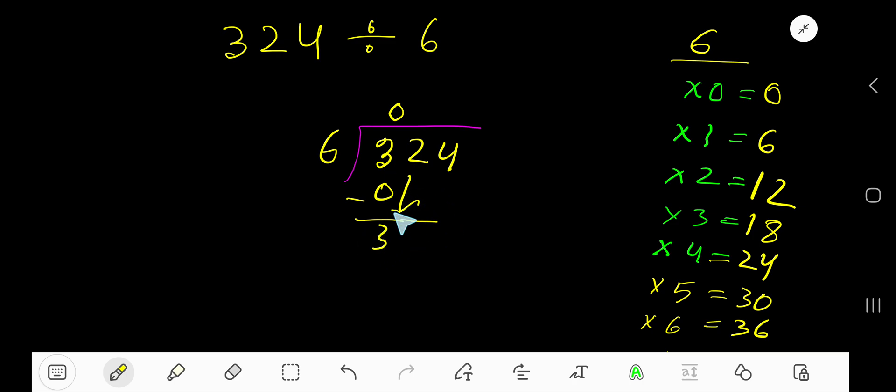Bring down this 2. Now you have 32. 6 goes into 32 how many times? 5 times. 6 times 6 is 36, 36 is greater, so you need to stop here.